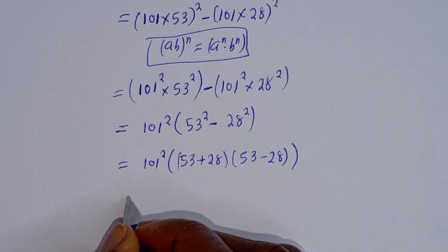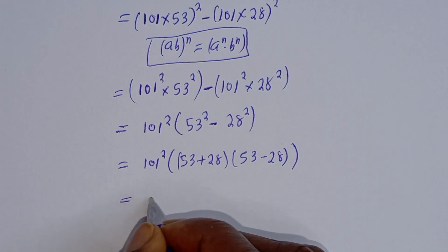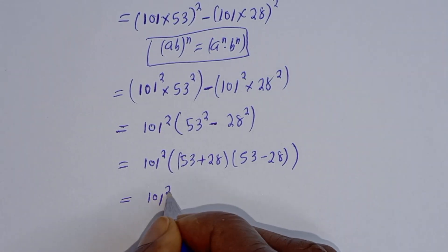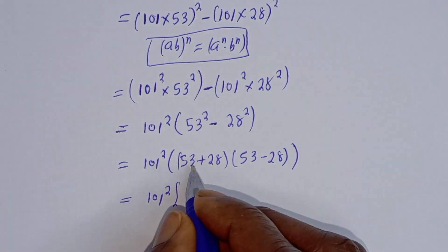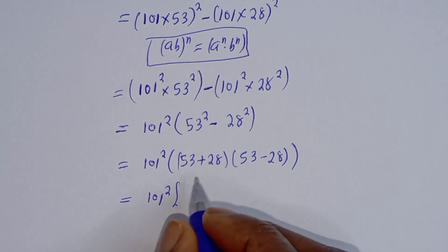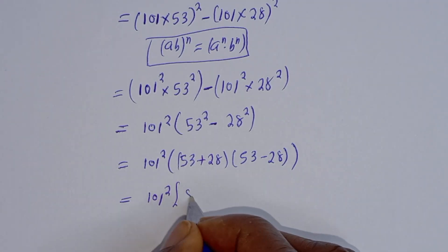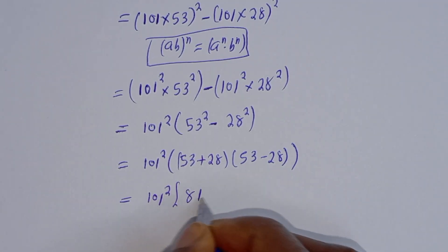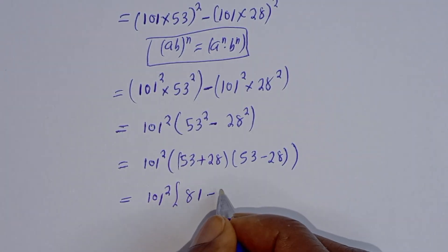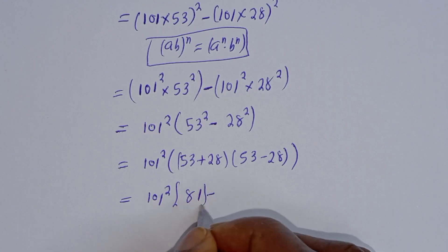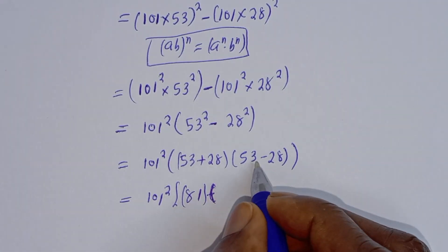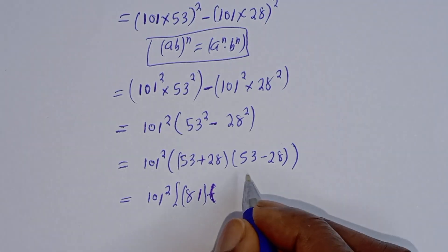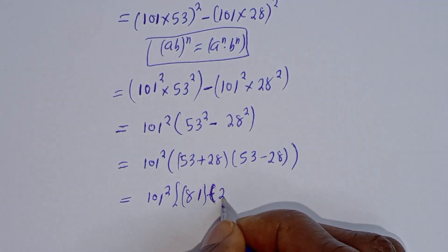This is equal to 101 squared bracket: 50 plus 28, that is 78 — wait, 53 plus 28, that is 81, multiplied by 53 minus 28, that is 25.